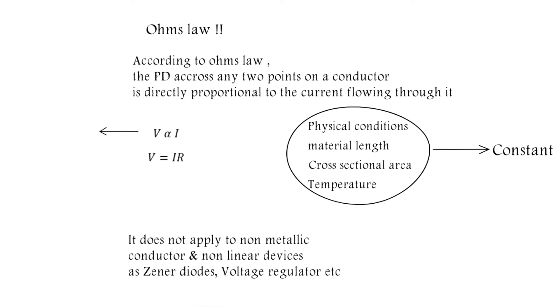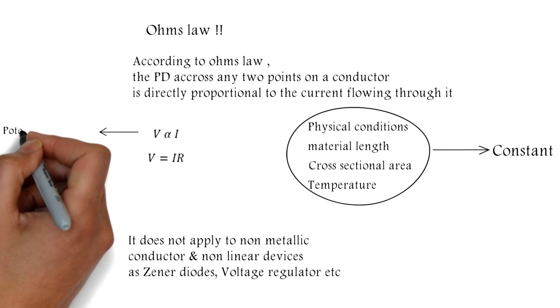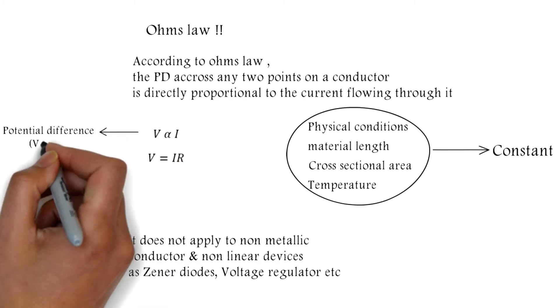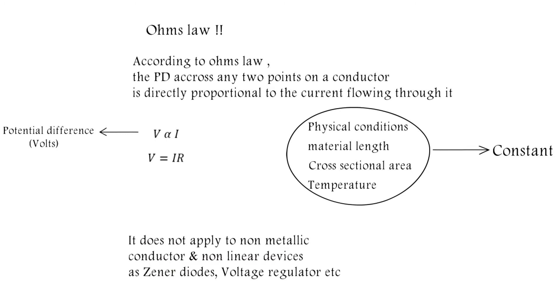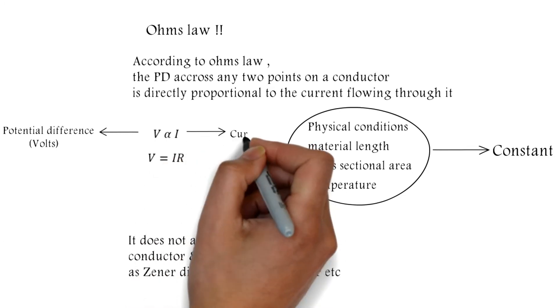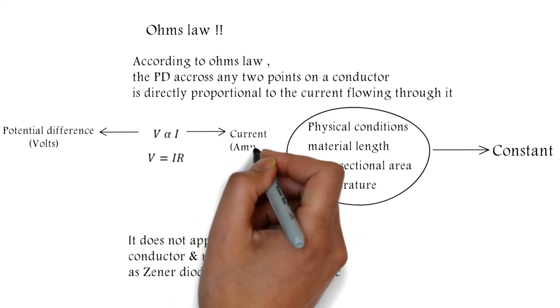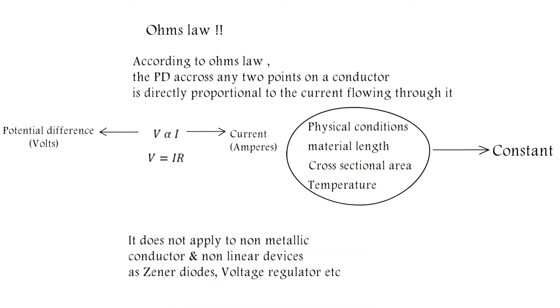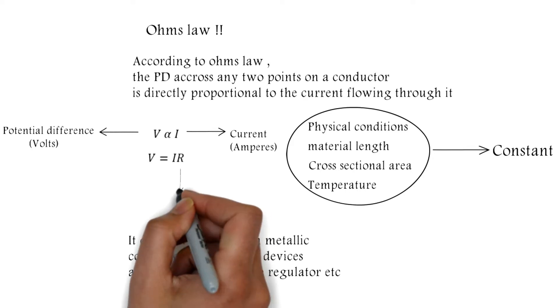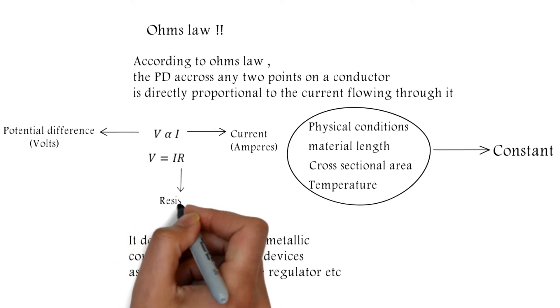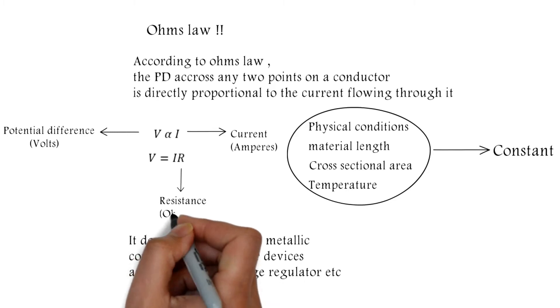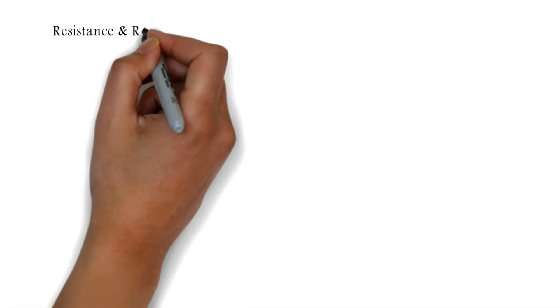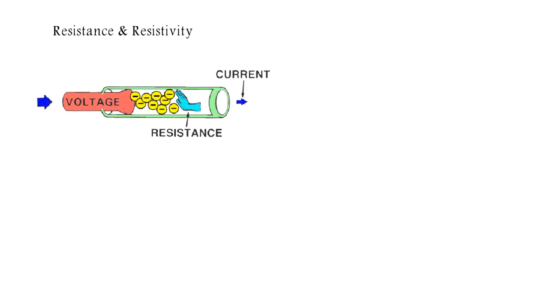In Ohm's Law, V is the potential difference in volts, I is the current in amperes, and R is the resistance in ohms. Resistance is always present in a conductor. Now, what is resistance and resistivity? Resistance is the opposition to the flow of electrons.